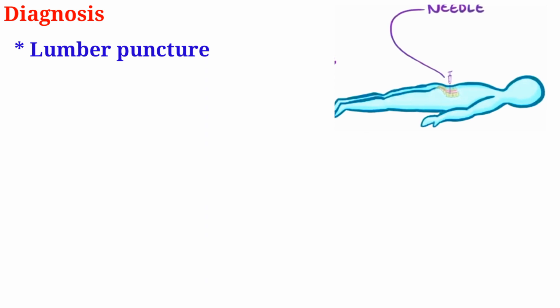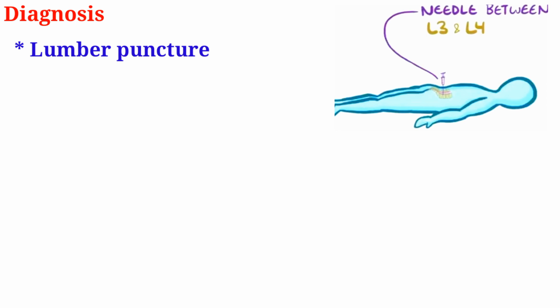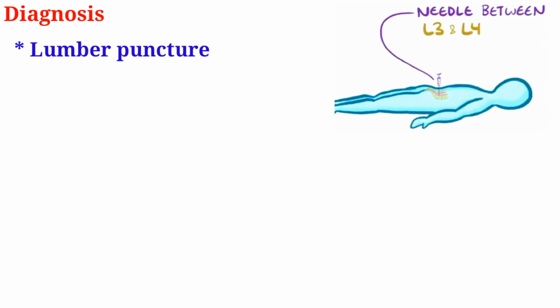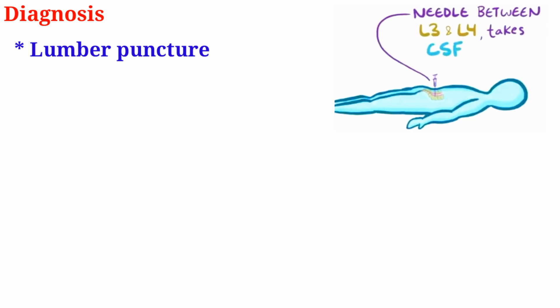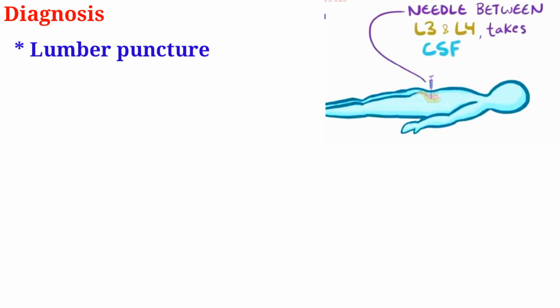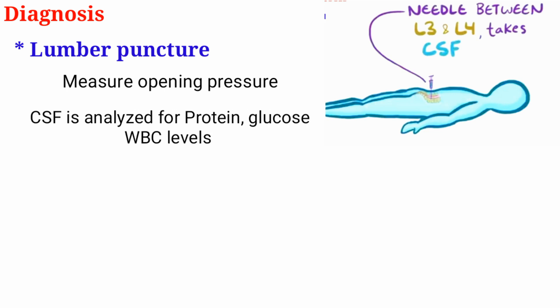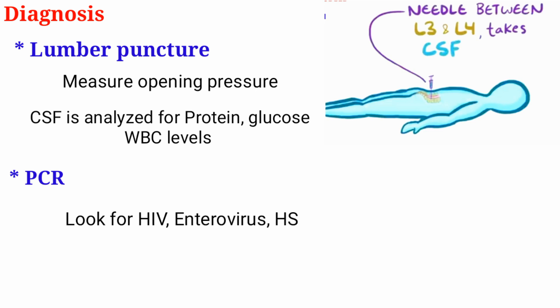If meningitis is suspected, a lumbar puncture can be done. This is when a needle goes through the lower lumbar vertebral level of the spinal cord, between L3 and L4 for example. The needle penetrates into the subarachnoid space and a few milliliters of cerebrospinal fluid is taken. The opening pressure can be measured and the CSF can be analyzed for white blood cell count, protein, and glucose levels. PCR — polymerase chain reaction — might be used to find specific causes like HIV, enterovirus, or HSV.